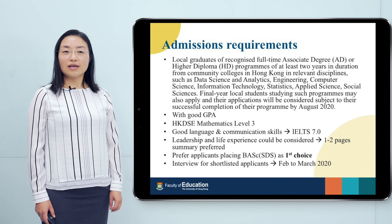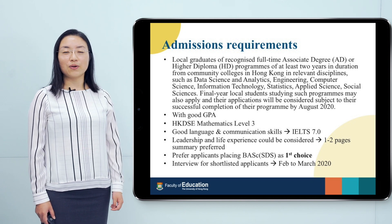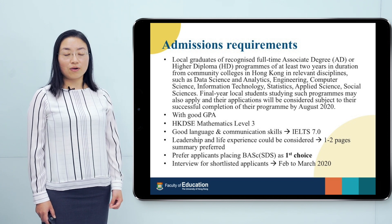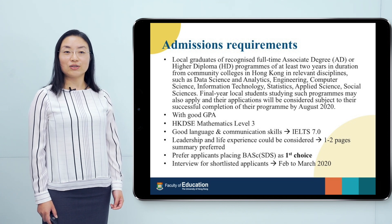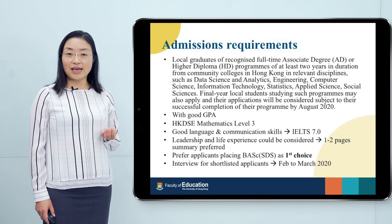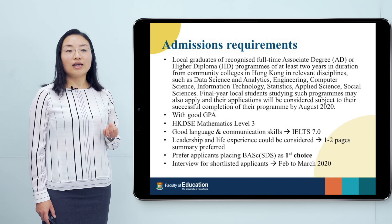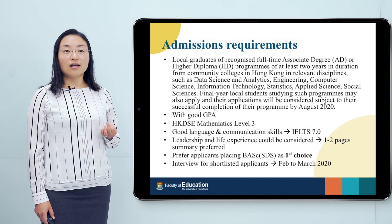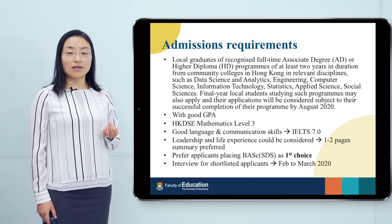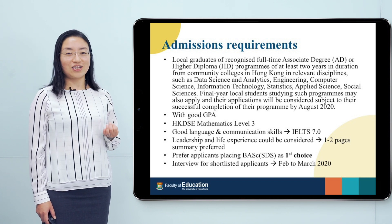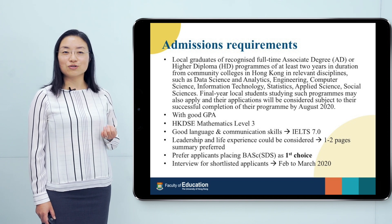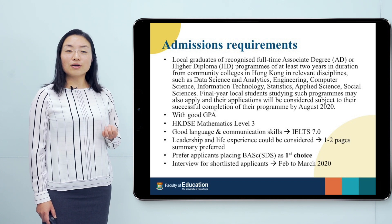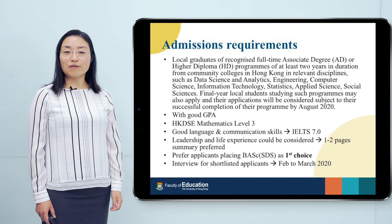In terms of admission requirements, we welcome applicants with an associate degree or higher diploma. If you are in the last year of those programs, you are also welcome to apply, subject to successful completion by August 2020. We will look at your GPA, DSE mathematics in particular, and your language and communication skills. We also pay attention to leadership and life experiences, as we are educating the next generation of leaders. We prefer applicants placing our program — Bachelor of Arts and Science in Social Data Science — as their first choice. Shortlisted applicants will be interviewed in February or March 2020.